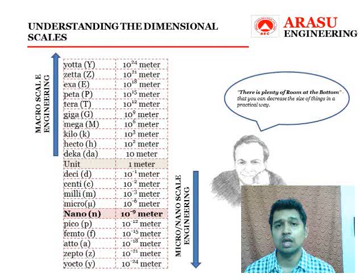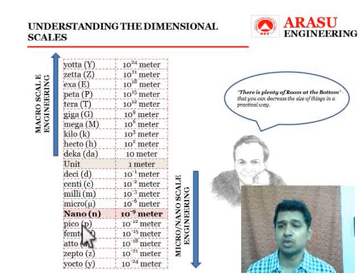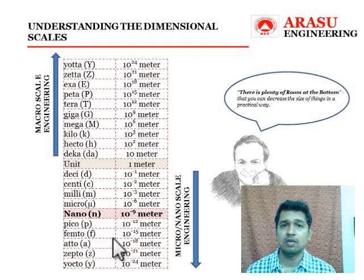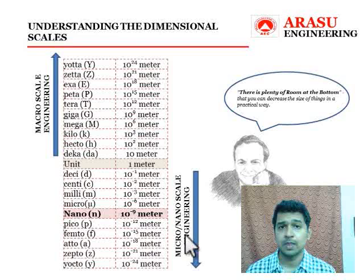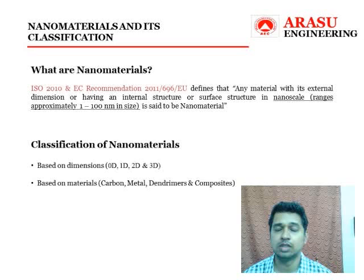There are scales below nano — Pico, Femto, Atto — and the list goes on. In my opinion, in another 30 to 40 years, people will start to talk about Pico technology, Femto technology, and Atto technology. But the real question is whether we will have tools that would enable us to work at this dimensional scale. Only time has to answer.